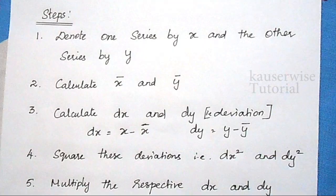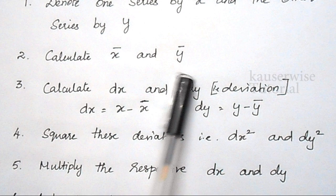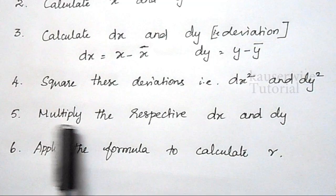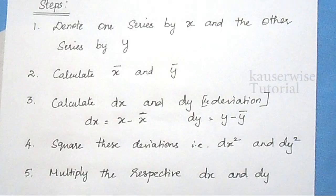Let me read all the steps. The first step is: denote one series by x and the other series by y. Second: calculate x̄ and ȳ. Third: calculate dx and dy, that is the deviation. Fourth: square the deviations, that is dx² and dy². Then multiply the respective dx and dy. And finally, apply the formula to calculate R, that is the coefficient of correlation.